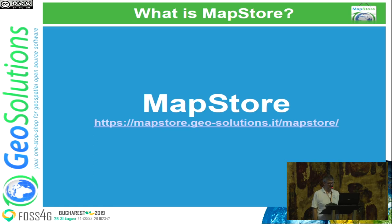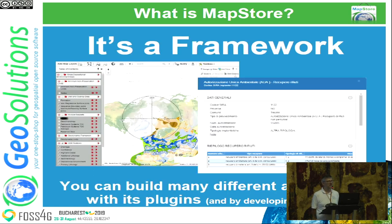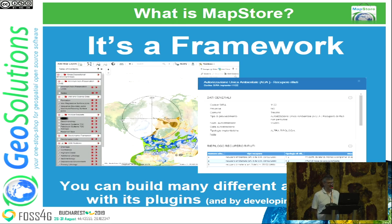MapStore is two different things. The first one is its framework aspect — it's a library you can use to build web GIS and mapping applications. If you think of Leaflet, OpenLayers, or Mapbox GL, those are libraries that allow building mapping applications too, but they are sort of low-level libraries, while MapStore tries to be something on a higher level — it uses all those libraries but adds more high-level tools that allow you to do complex things in a simple way.